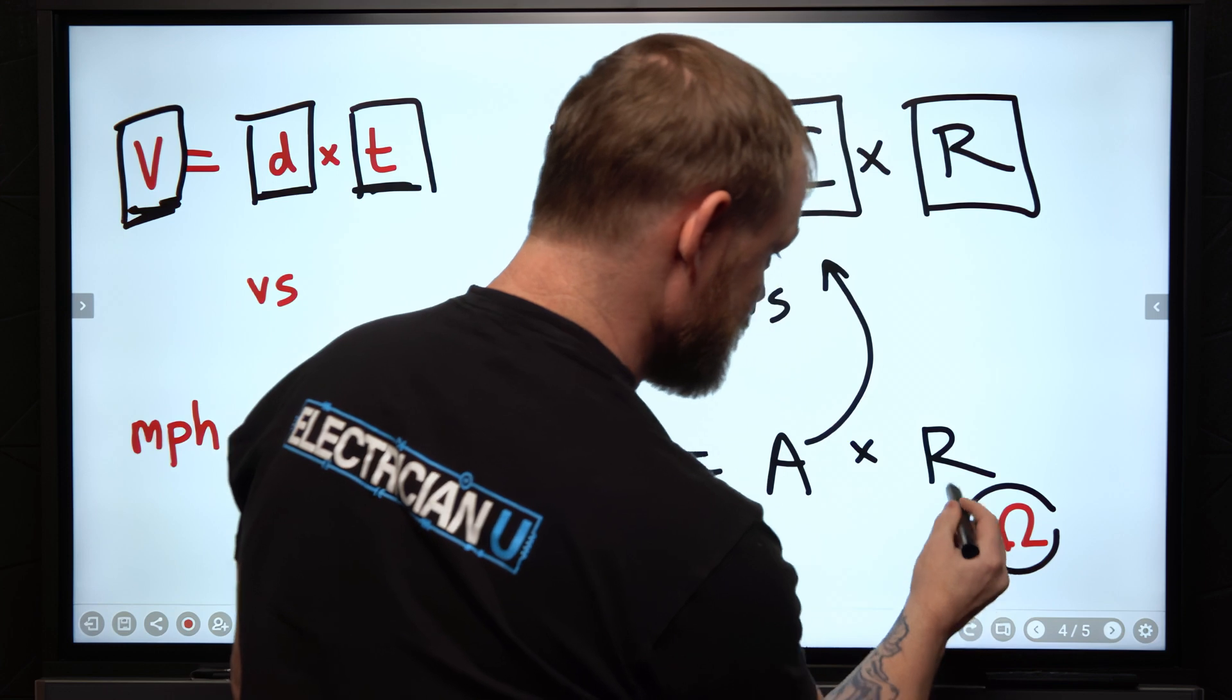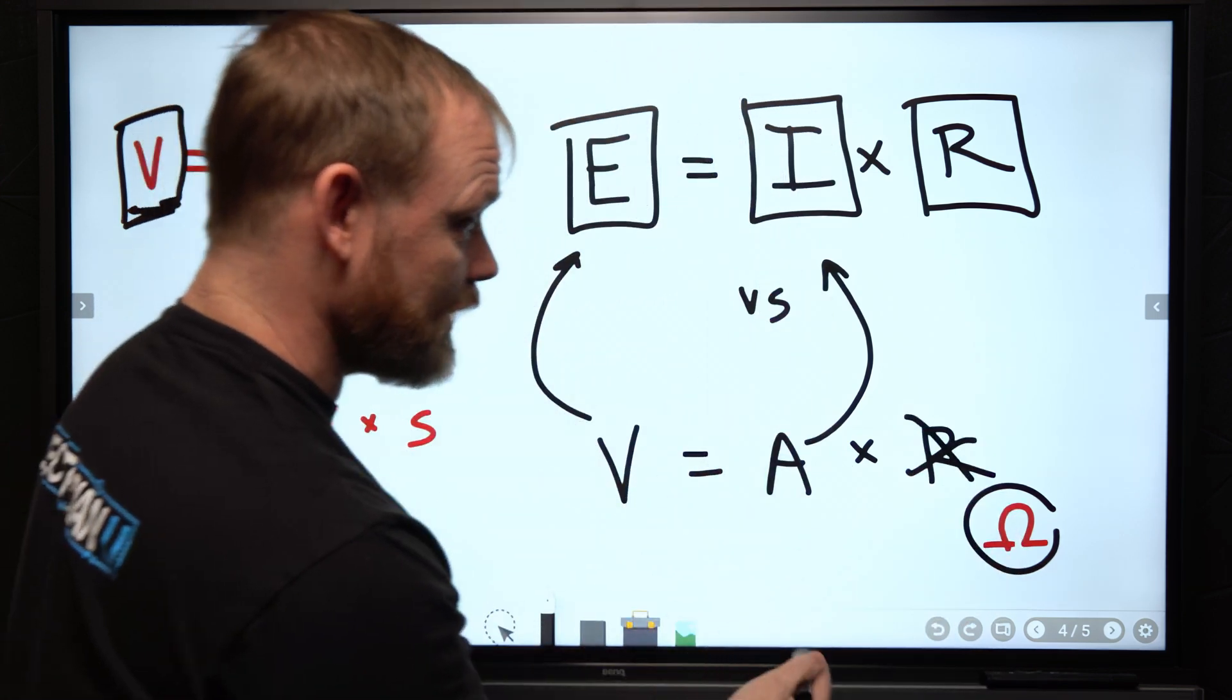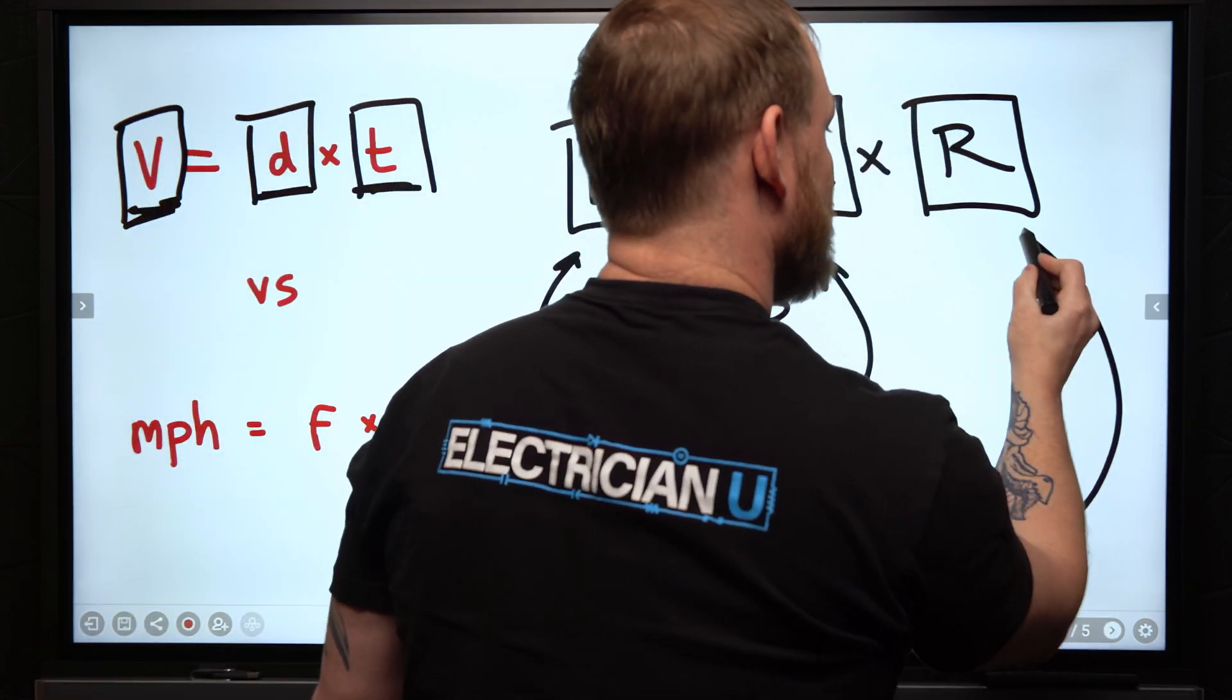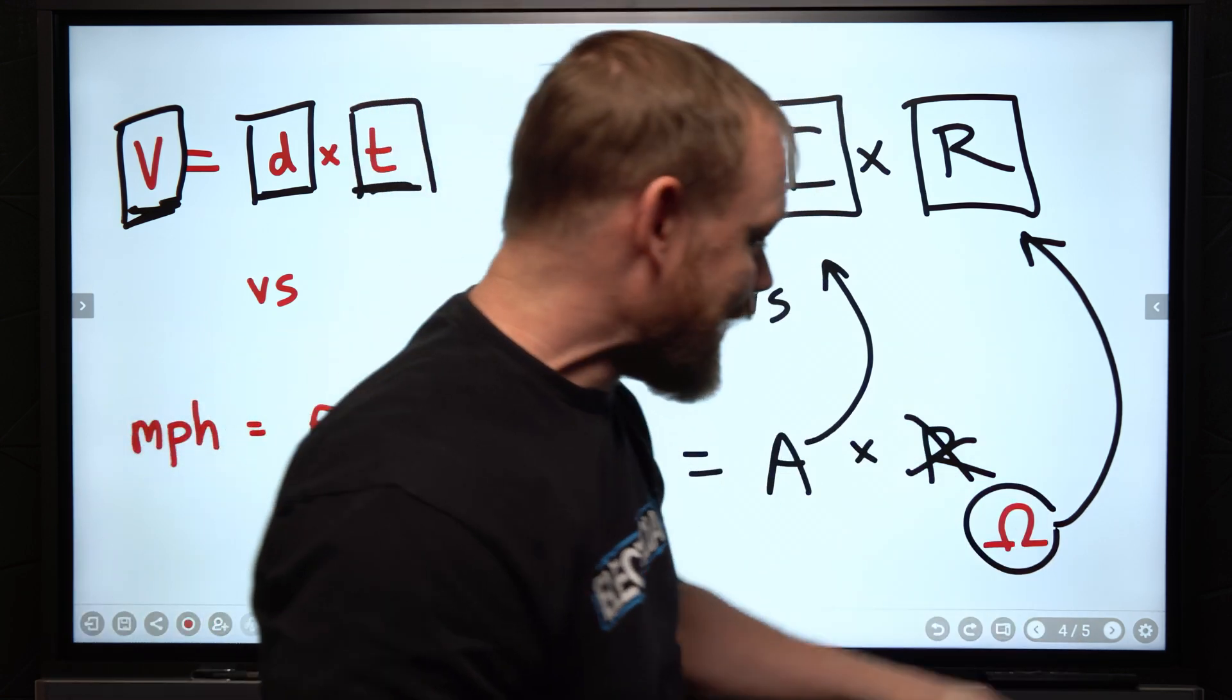The ampere is the quantity of charge flow and the ohm, the right thing that you should be using here if you're going to do this crazy weird stuff is the measure of how much opposition to resistance. Now, final thought,